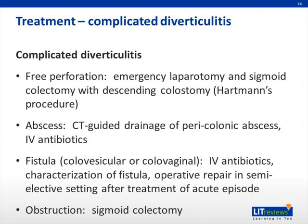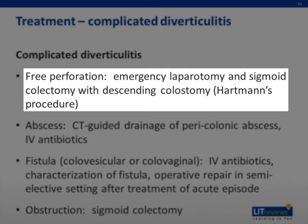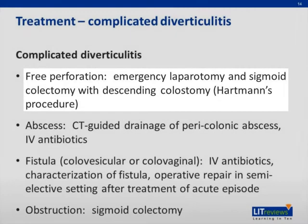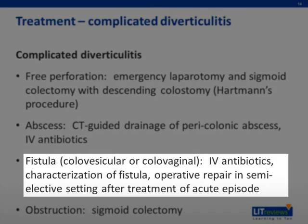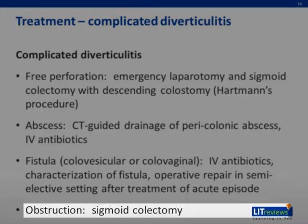The treatment of complicated diverticulitis is more complex and depends on what particular type of complication has occurred. In the most extreme case of free perforation with significant contamination of the peritoneal cavity, surgical intervention is required, consisting of exploratory laparotomy, sigmoid colectomy, and end colostomy, also referred to as a Hartmann's procedure. If a large pericolonic or pelvic abscess is present but there is no free perforation, usual treatment consists of CT-guided percutaneous drainage of the abscess and treatment with IV antibiotics. If fistulization has occurred, this will likely require operative correction, but usually this is undertaken on a semi-elective basis after resolution of the acute inflammatory process. Finally, if diverticulitis has resulted in colonic obstruction, this will require operative intervention with sigmoid colectomy.